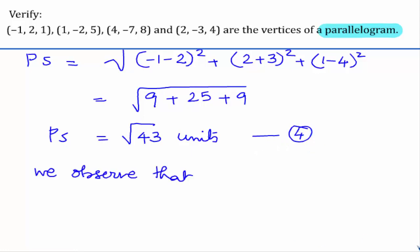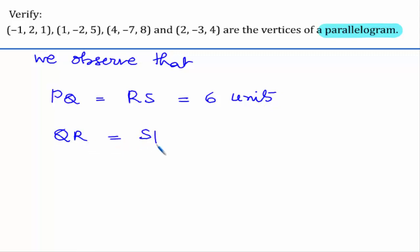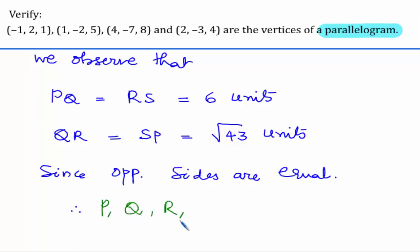We observe from the four equations that PQ equals RS equals 6 units, and QR equals SP equals root 43 units. Since opposite sides are equal, therefore P, Q, R, S are vertices of a parallelogram.